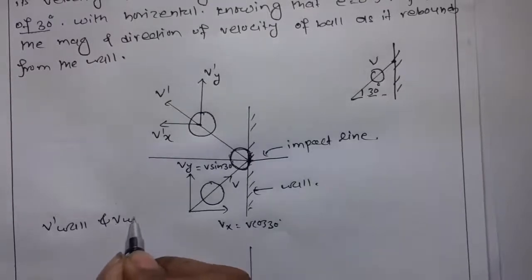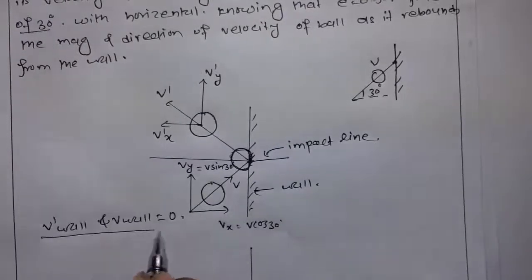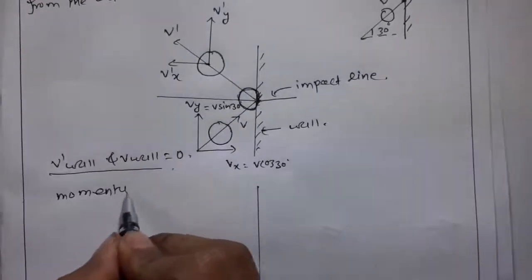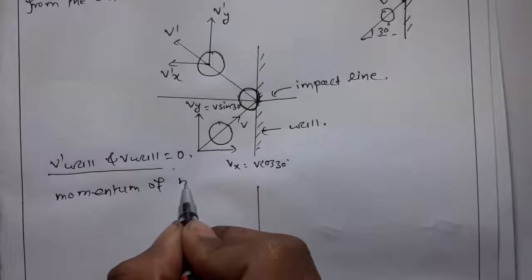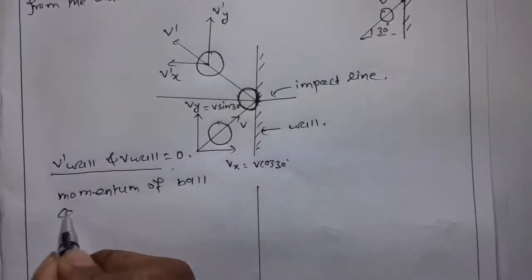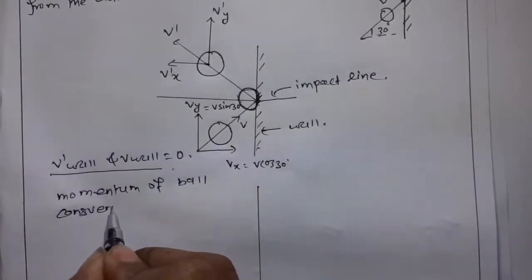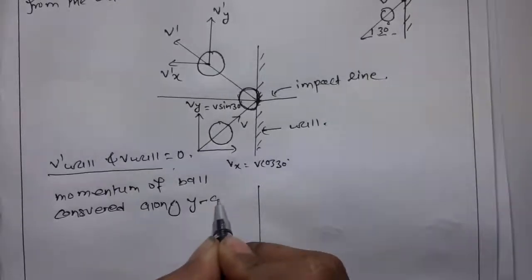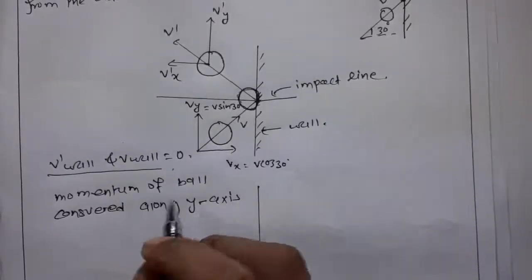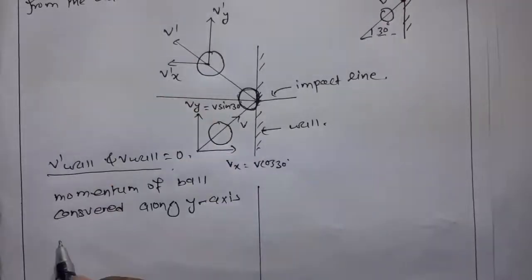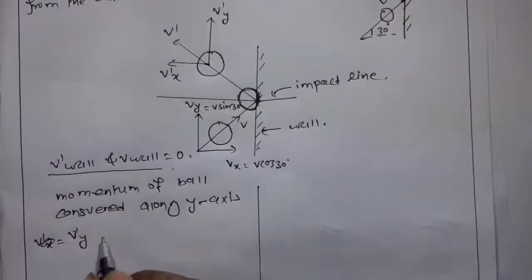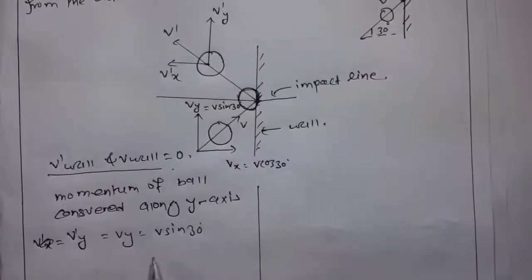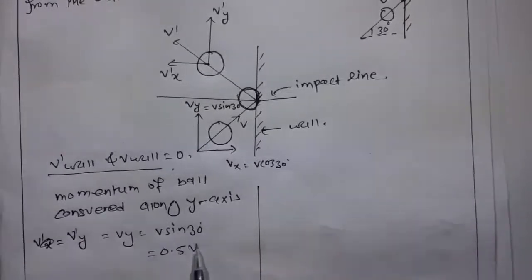V wall is 0. Momentum of ball is conserved along the y-axis. So v dash y is equal to v y, which is equal to v sine 30 degrees. This is 0.5 v.